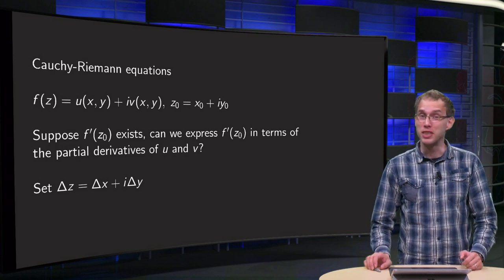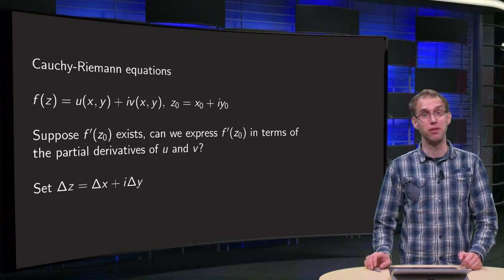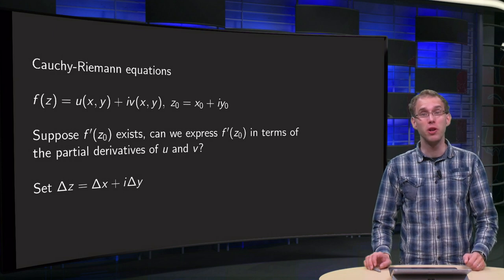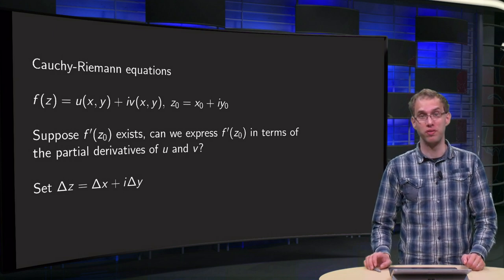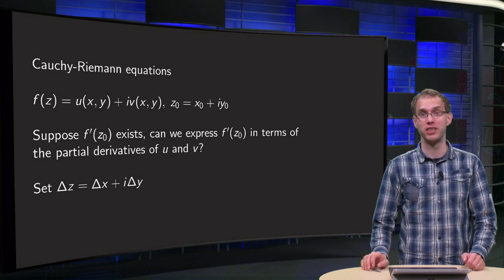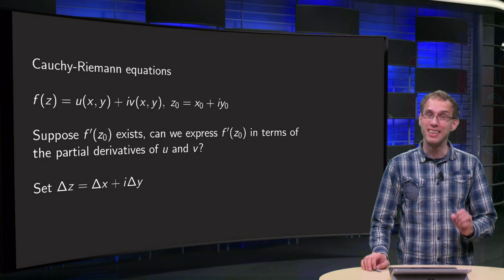We have already seen that differentiability of u and v is not enough to guarantee differentiability of f. In this video we will learn that we will need more of u and v. They also need to satisfy the so-called Cauchy-Riemann equations. In this video we will learn what those equations are and why they need to be satisfied.